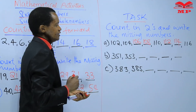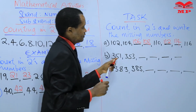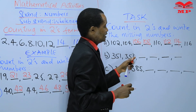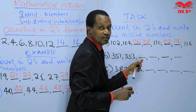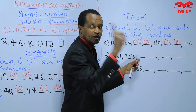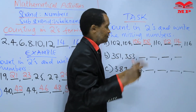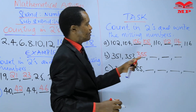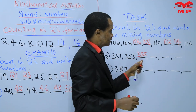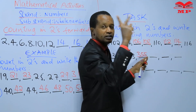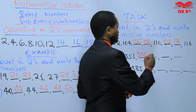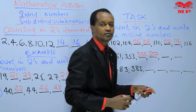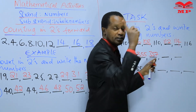Moving on to B: 351, 353 — the next number is missing. We count: 353, 354, 355 — the missing number is 355. How about the next missing number? 355, 356, 357 — the missing number is 357.